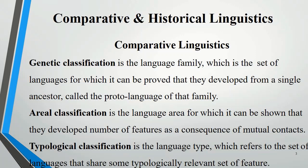Genetic classification refers to the language family, which is the set of languages for which it can be proved that they developed from a single ancestor called the proto-language of that family. Areal classification refers to a language area where languages developed shared features as a consequence of mutual contact. Typological classification refers to a language type, which is the set of languages that share some typologically relevant set of features.